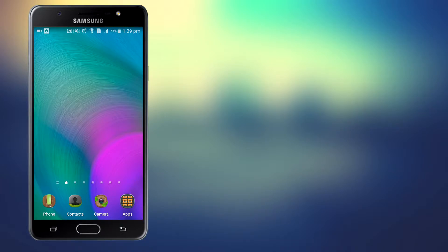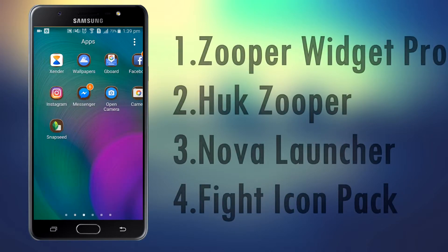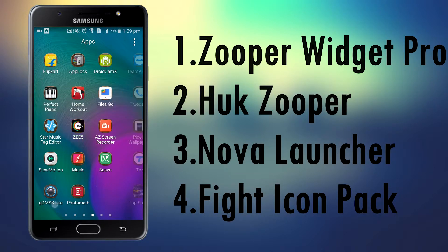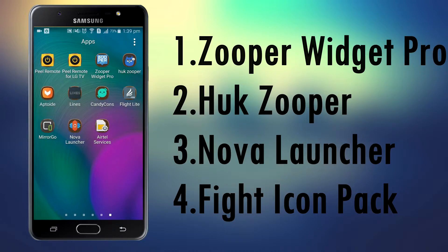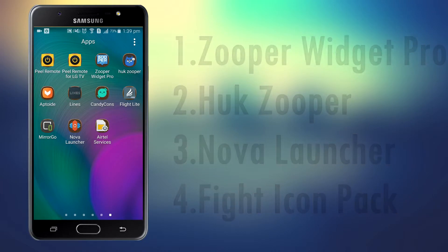We are gonna have all the steps from 1 to 10 so that you will not be confused when you do your customization. What you have to do is download some things and that includes the Zooper Widget Pro, Hug Zooper, the Flight Light icon pack, Nova Launcher, and that's pretty much it.